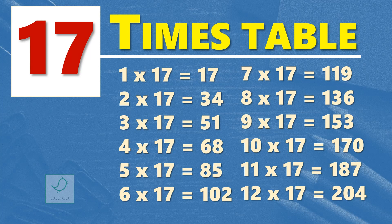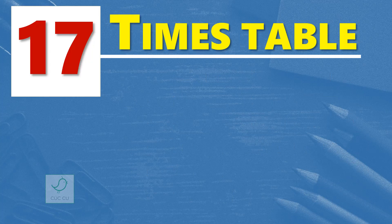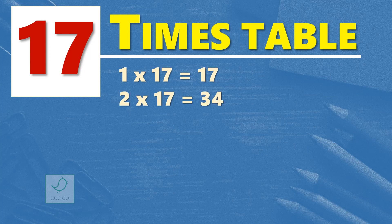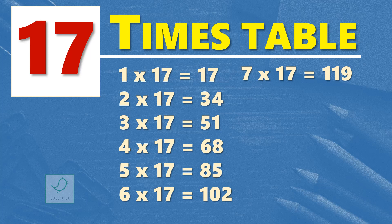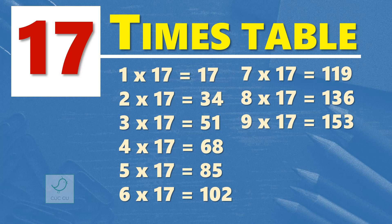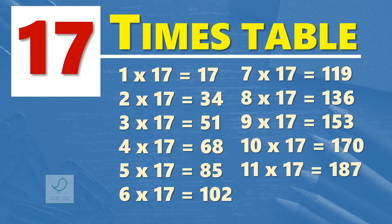One more time. 17 times table. 1 times 17 is 17. 2 times 17 are 34. 3 times 17 are 51. 4 times 17 are 68. 5 times 17 are 85. 6 times 17 are 102. 7 times 17 are 119. 8 times 17 are 136. 9 times 17 are 153. 10 times 17 are 170. 11 times 17 are 187. 12 times 17 are 204.